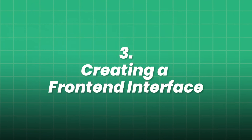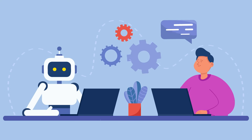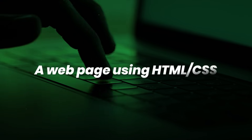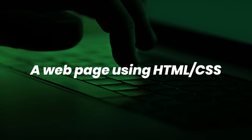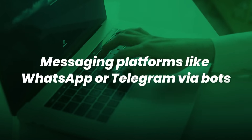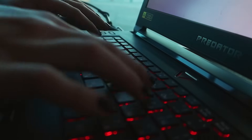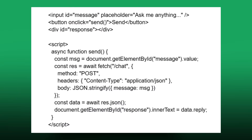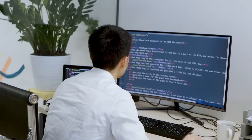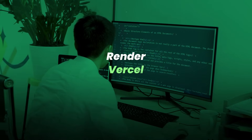Step 3: Creating a front-end interface. Now your chatbot has a brain, but it needs a face. You can embed it into a web page using HTML/CSS, a mobile app using React Native or Flutter, messaging platforms like WhatsApp or Telegram via bots, or even smart speakers via voice SDKs. Let's keep it simple and use HTML plus JavaScript. You now have a complete chatbot that can speak, listen, and think — hosted locally or deployed via platforms like Render, Vercel, or Heroku.